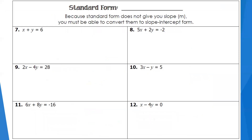Another way you might see an equation of a line is in standard form: ax plus by equals c. In this form, it doesn't explicitly give you the slope. But we can convert it to slope-intercept form to find the slope. Capital A is the coefficient in front of x, and capital B is the coefficient in front of y. Your goal is to use algebra to solve for y.